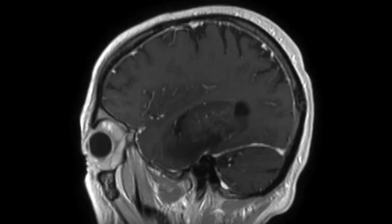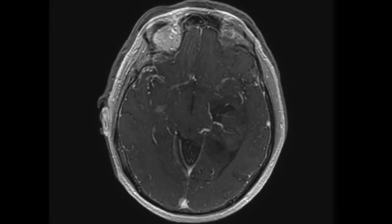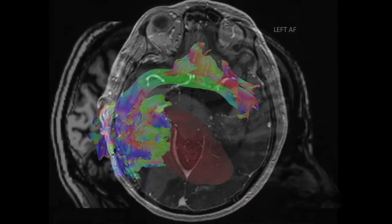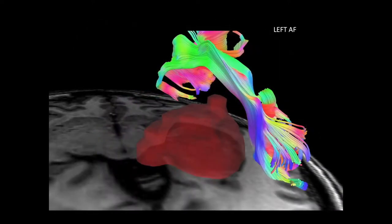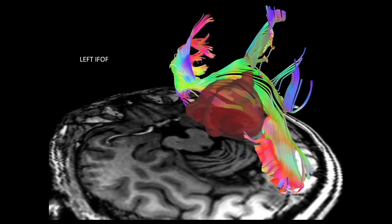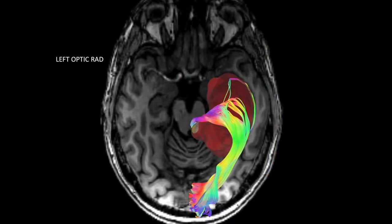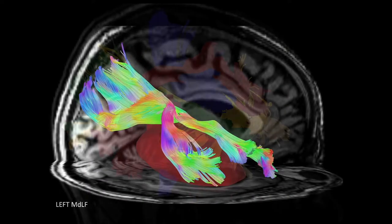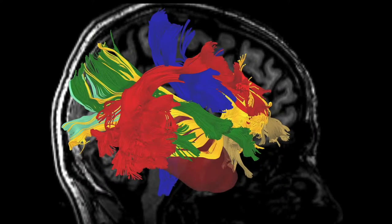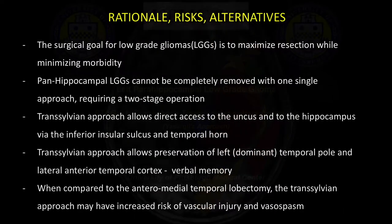That's why we call it a pan-hippocampal glioma. You can see a large inferior ventricular vein, and this is the fiber tracking that was done pre-op, showing the arcuate fascicle lateral, as well as the optic radiations above and lateral of the tumor, and these are all the other fiber tracts and their relationship with the tumor bands.